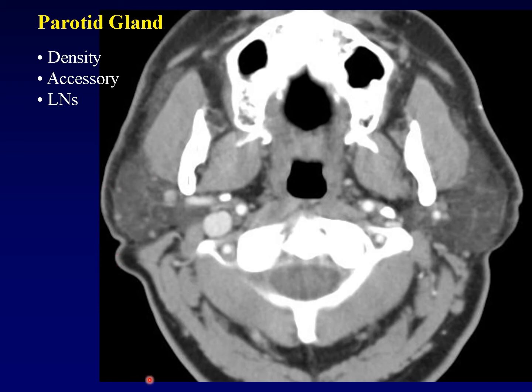Although we speak of superficial and deep lobes of the parotid gland, there is actually an inconstant third lobe — the accessory lobe. When it exists, the accessory lobe lives superficial to the masseter muscle. It can be very asymmetric and can be mistaken for a pathologic mass both clinically and on imaging. The key to avoiding that error is to note that the texture of the accessory lobe is identical to the texture of the rest of the parotid gland.